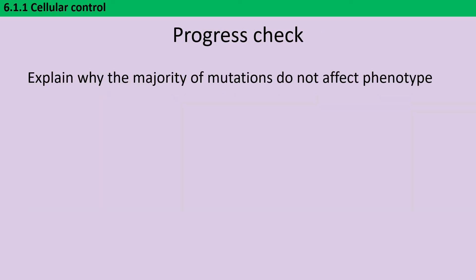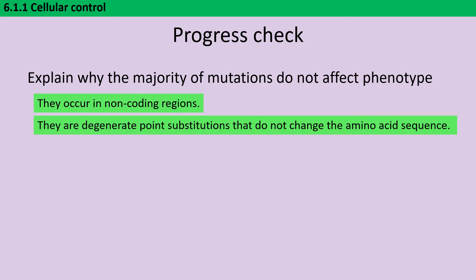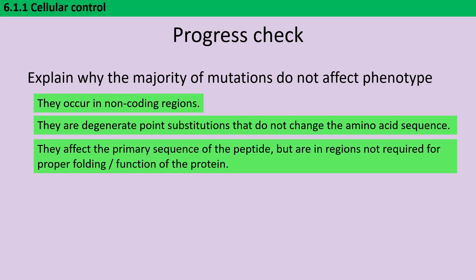Pause and check your understanding: why do the majority of mutations not affect the phenotype of an organism? There are three key points. First, the mutation might occur in a non-coding region. Second, it might not change the amino acid sequence — so it might be a silent mutation. And finally, it might affect the primary sequence of the peptide but not be required for proper folding or functioning of the protein.